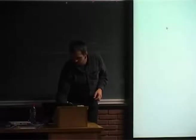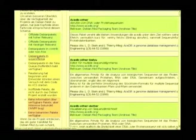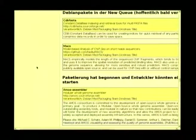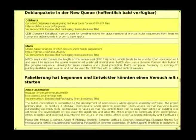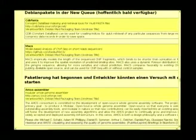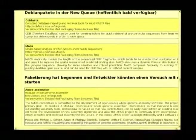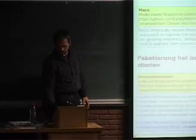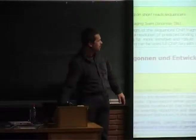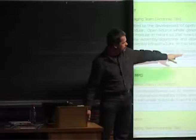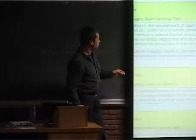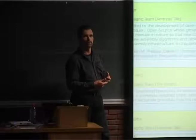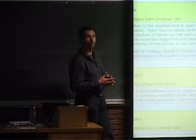We also have different colored sections. We have some packages which are new and expected to arrive inside Debian. We have some packages which we are currently working on. There is also information about where you can find the package in the VCS — for example, if a package is in SVN, you can work on it. We want to avoid people making duplicate effort, so they could start working on listed packages.